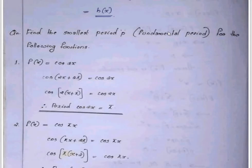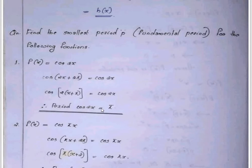Find the smallest period p, that is the fundamental period. For f of x equals cos 2x: cos 2 times (x plus b) equals cos 2x, so x plus b equals x, meaning the period is π. So 2π and 3π are also periods, but the fundamental period is π.